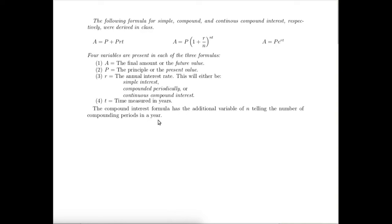The compound interest formula has the additional variable of N, which tells the number of compounding periods in a year. So if we're compounding quarterly, N will be 4. Compounding semi-annually, N will be 2. If we're compounding annually, then N will be 1. If we're compounding daily, N would be 365. But that will always be given in the problem.